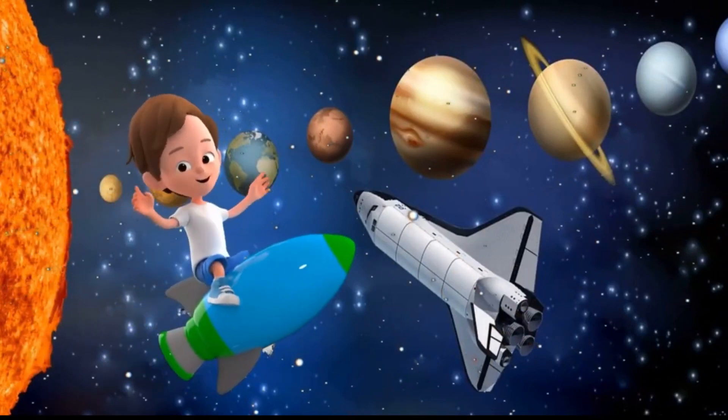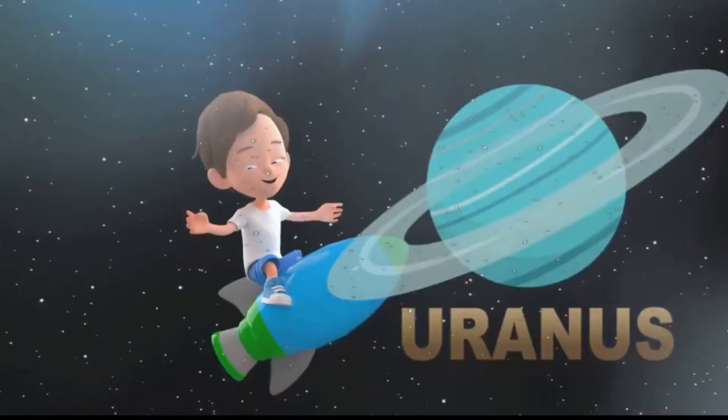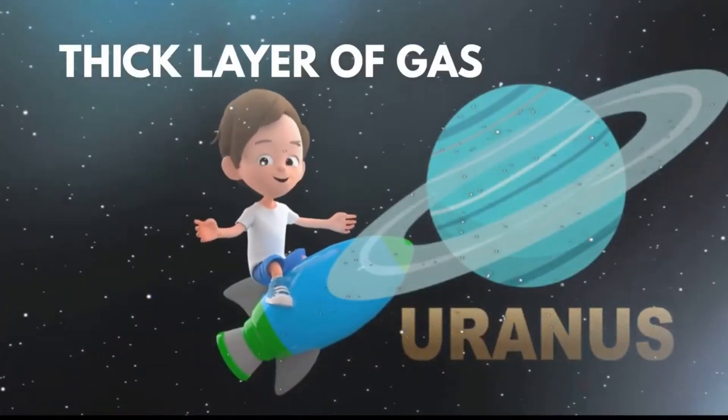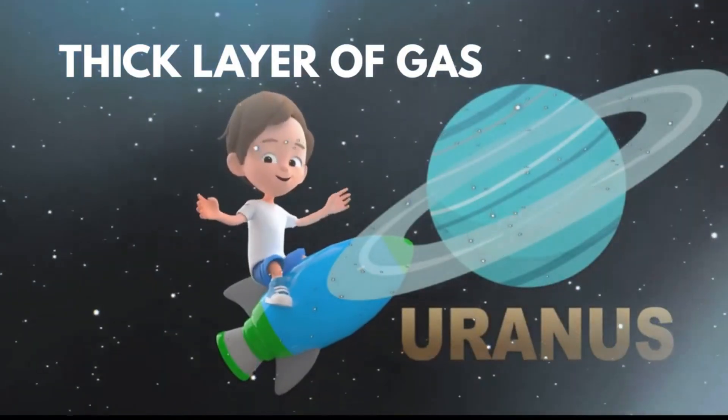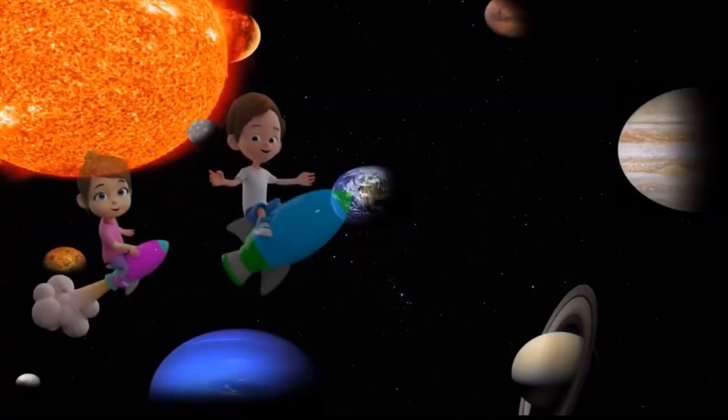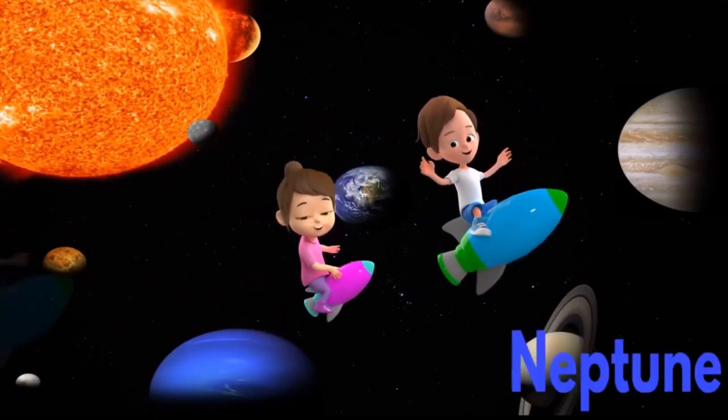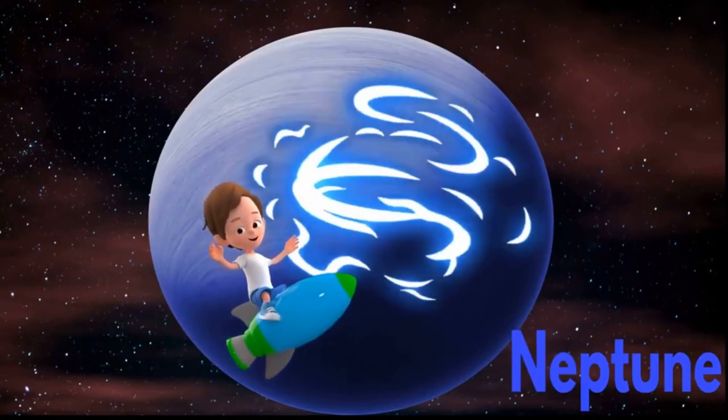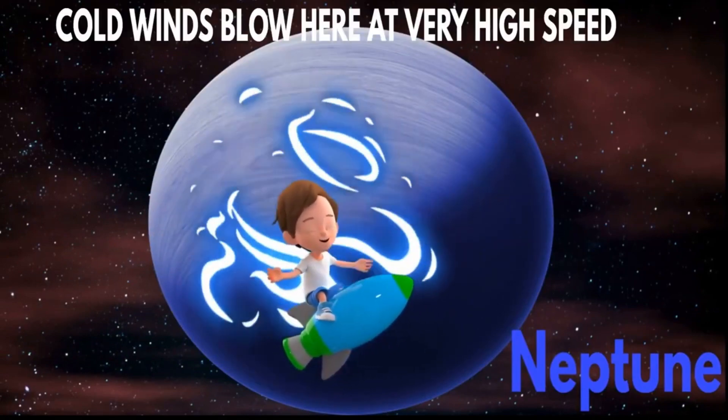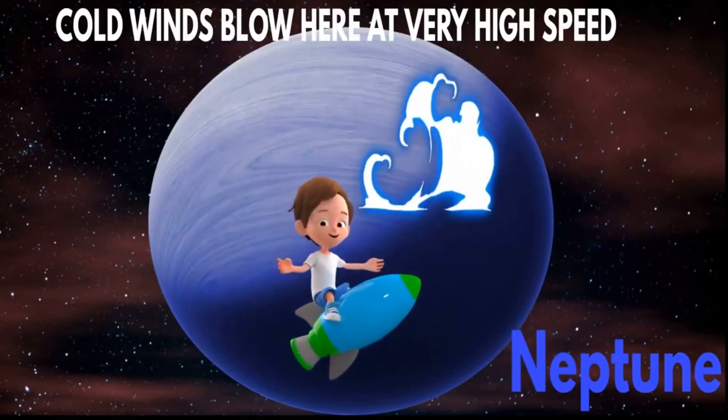The seventh planet is Uranus. A thick layer of gas covers this planet. The eighth planet is Neptune. As this planet is furthest from the sun, cold winds blow here at very high speeds.